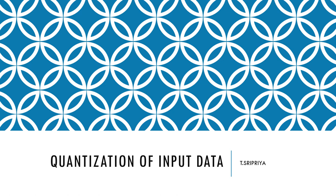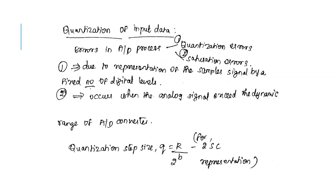Hi everyone. In this session we are going to look at quantization of input data. For processing an analog signal using a digital system, the analog signal has to be digitized by an A to D converter. This A to D converter consists of a sampler and a quantizer.